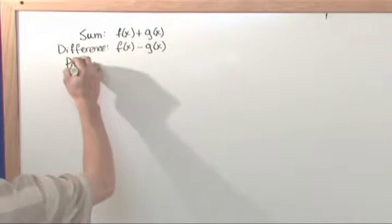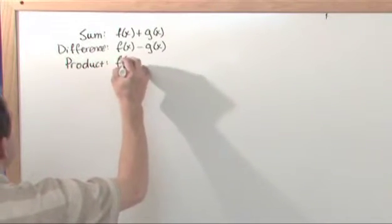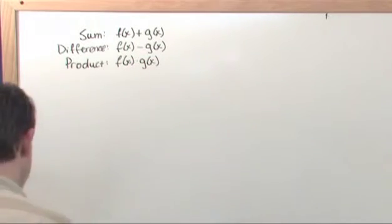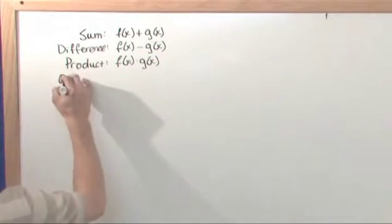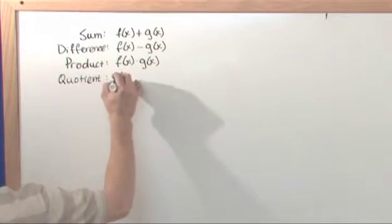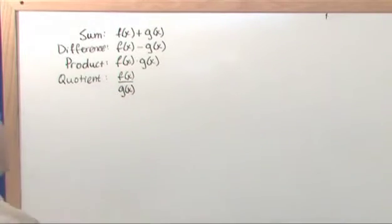You do have the product. So you can have f(x) times g(x). And you can have the quotient. So you can have f(x) divided by g(x). So there's nothing magical here. This section is basically going to have a bunch of problems that have you do this and get some practice with it.